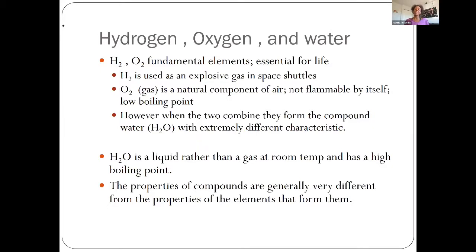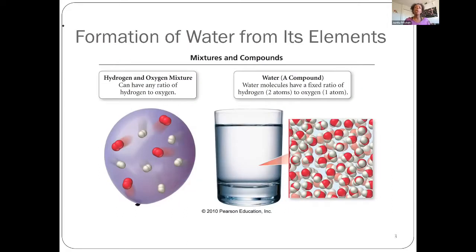When we put these two together, the most common way we'll find this compound at room temperature is water. Water is a liquid rather than a gas at room temperature and has a rather high boiling point. The take-home message is that properties of compounds are generally going to be very different from the properties of the elements themselves. When we think about the compound water, there's always a consistent ratio of two hydrogen atoms for every one oxygen atom, whereas elements can be in any type of ratio. When forming a compound, there's a specified ratio of atoms or elements present.